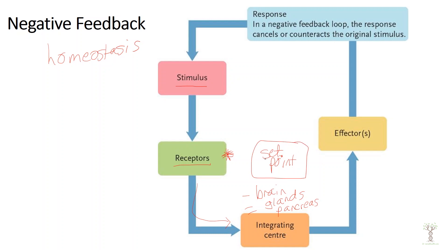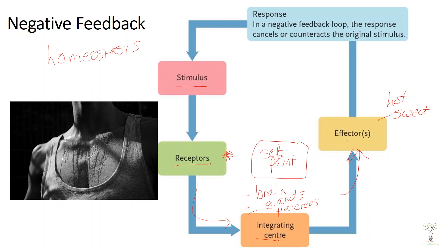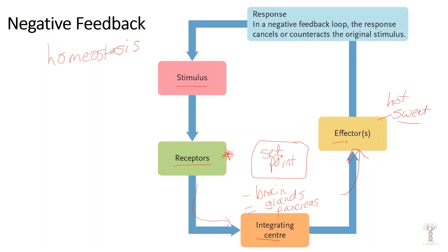If something is off the set point and outside its normal range, the integrating center triggers effectors, and the effectors do something. For example, if you're too hot, the effectors could trigger sweating — the effectors could be sweat glands. In the end that results in a response. In a negative feedback loop, the response is always going to be counteracting whatever the stimulus was. If the stimulus is that we're too hot, the effect is that we cool down by sweating. Different factors have different receptors and different effectors so that we can keep things in balance.